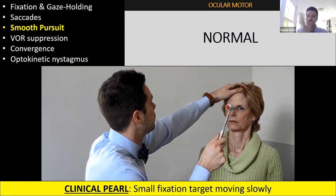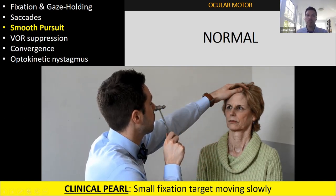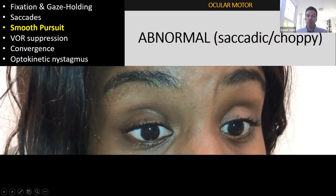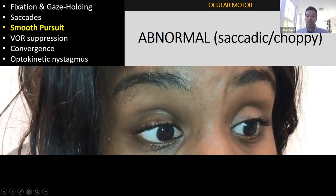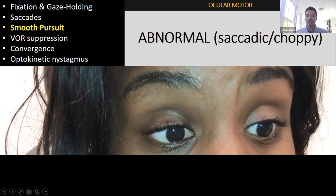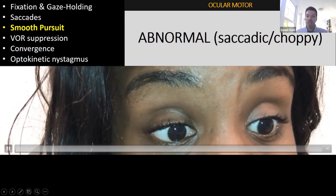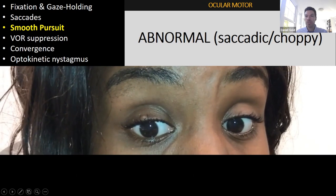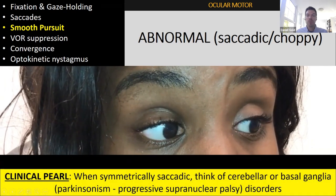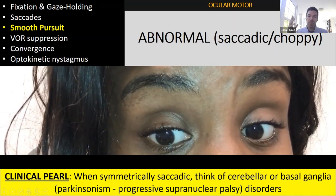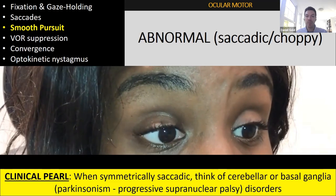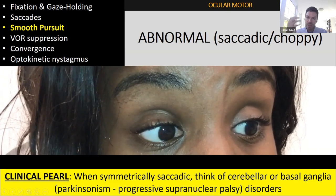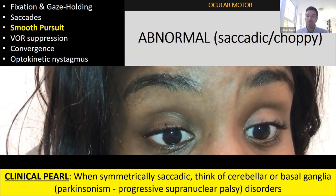For smooth pursuit, you need a small fixation target and you have to move slowly — if you move fast you're testing saccades, not pursuit. This patient with cerebellar degeneration has very choppy eye movements; her pursuit gain is so low she has to substitute saccades. When everything is saccadic — right, left, up, down — you're thinking cerebellar, basal ganglia, or parkinsonism/PSP. If it's asymmetric, just to one side, think about an ipsilesional problem.